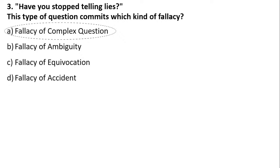'Have you stopped telling lies?' means that the question is assuming this person was lying before. If you ask someone 'Have you stopped telling lies?' and they say yes, it means they were lying before. If they say no, it means they are still lying. So whether the answer is yes or no, the person is trapped. This is the fallacy of complex question.